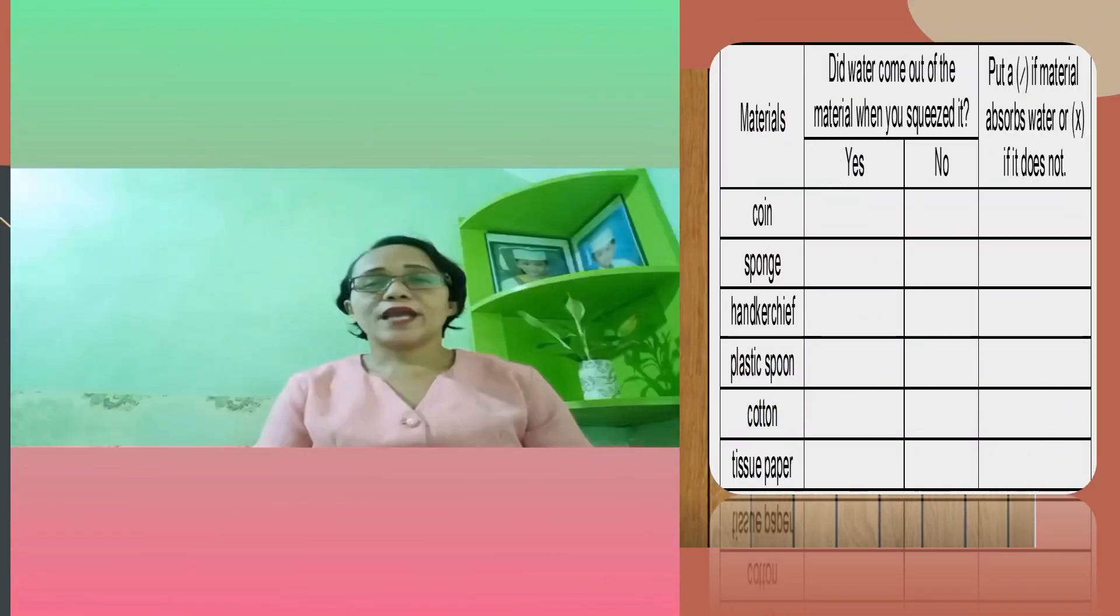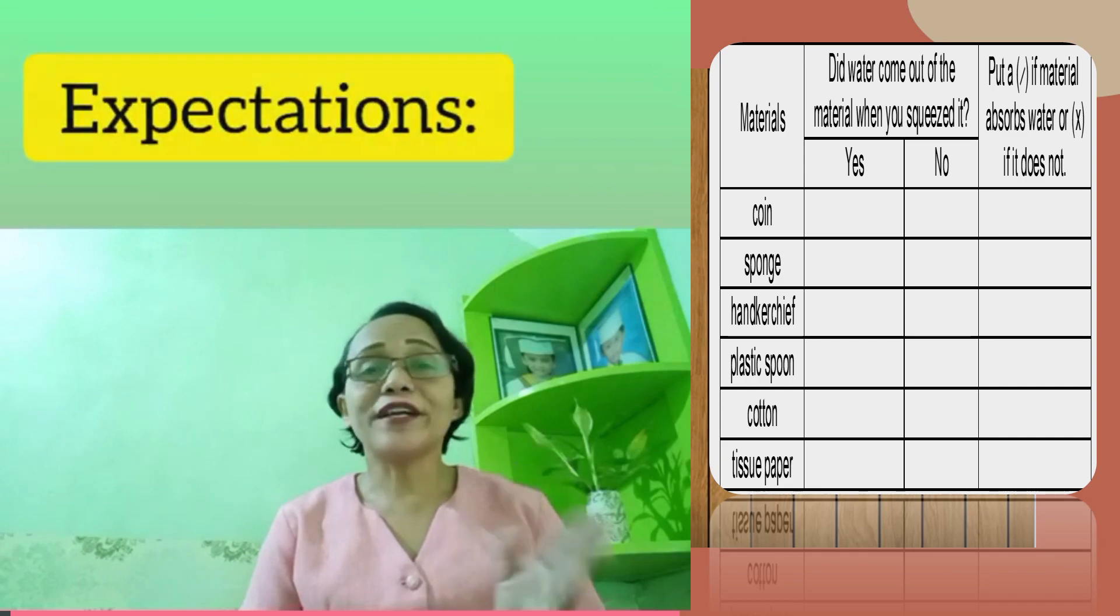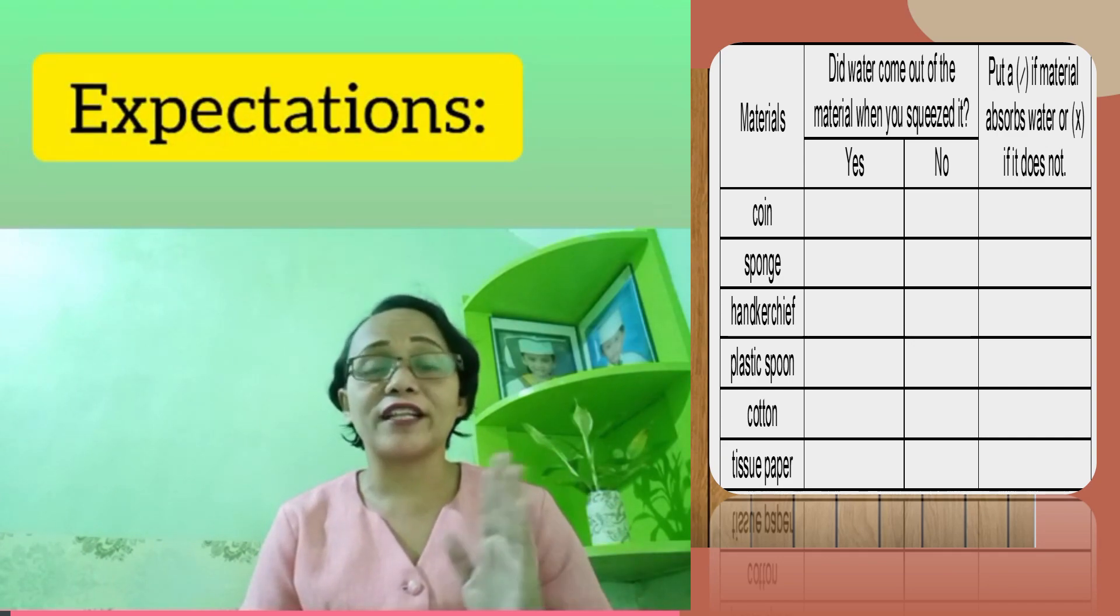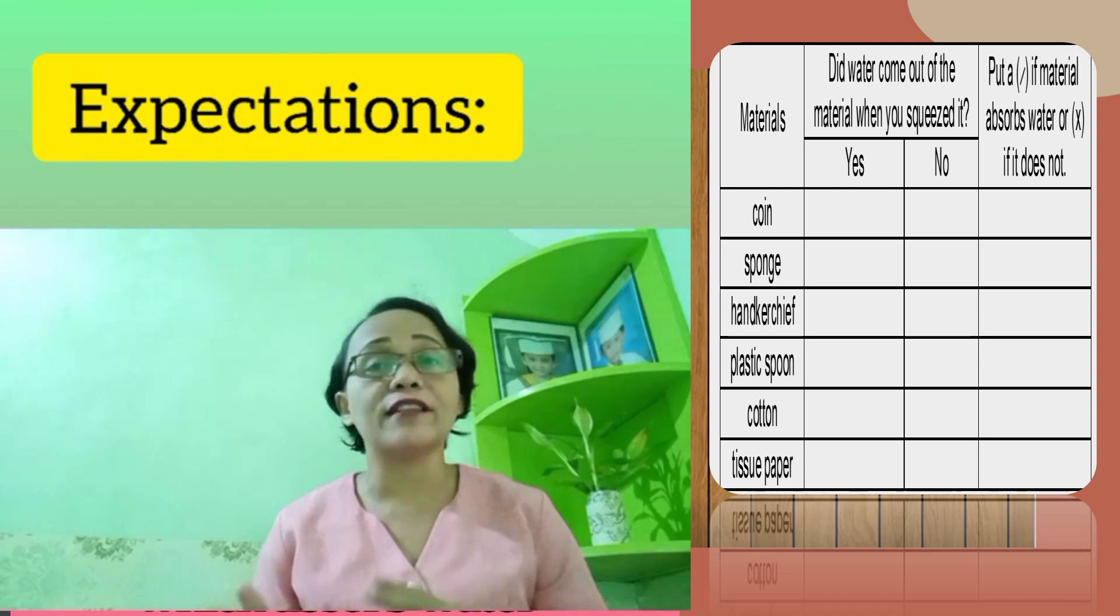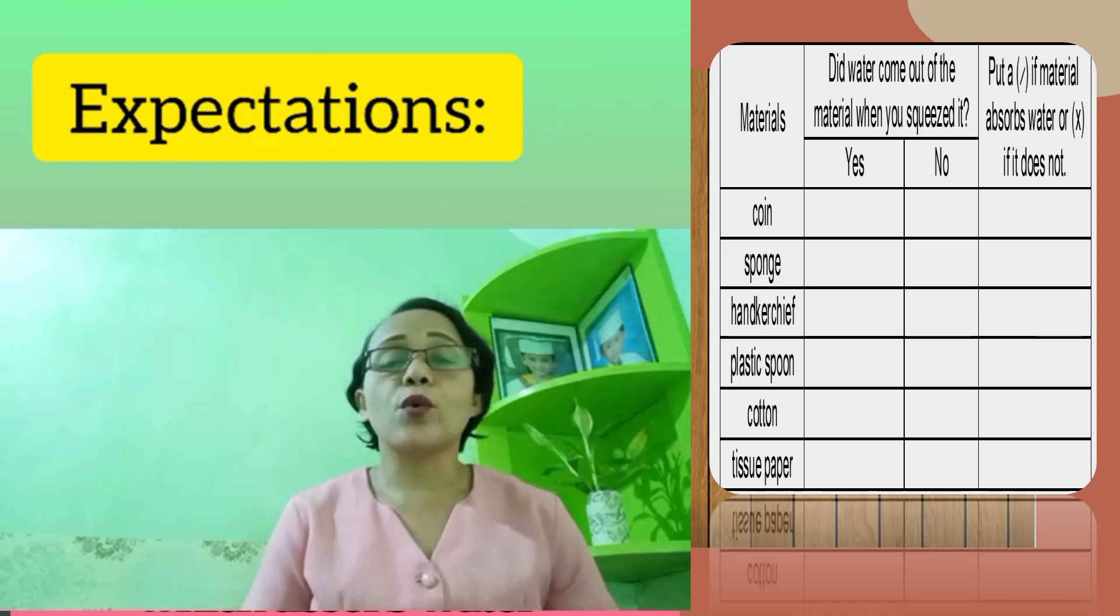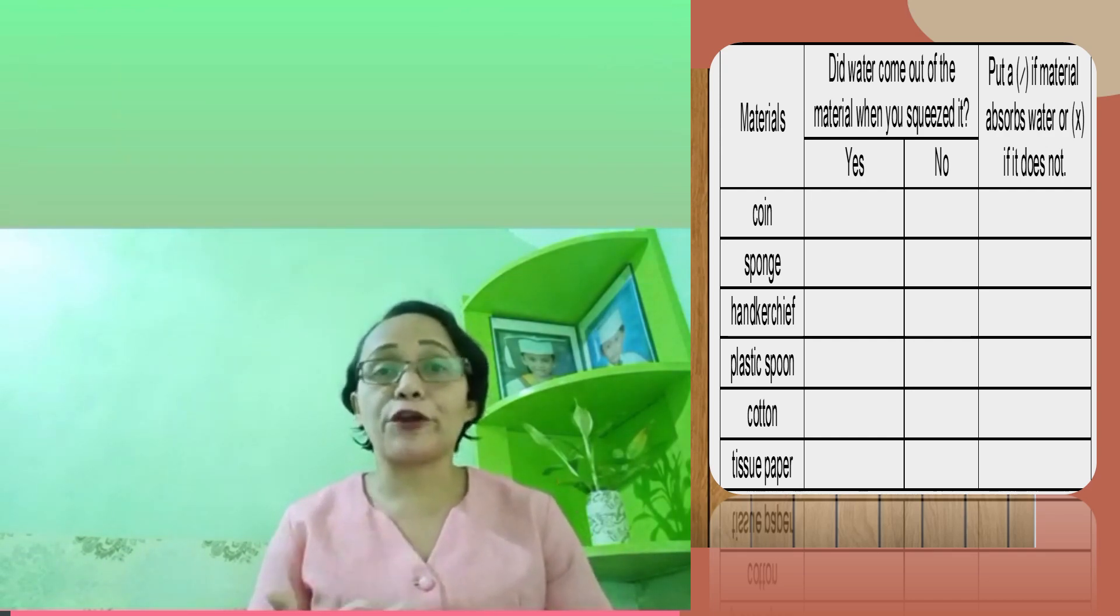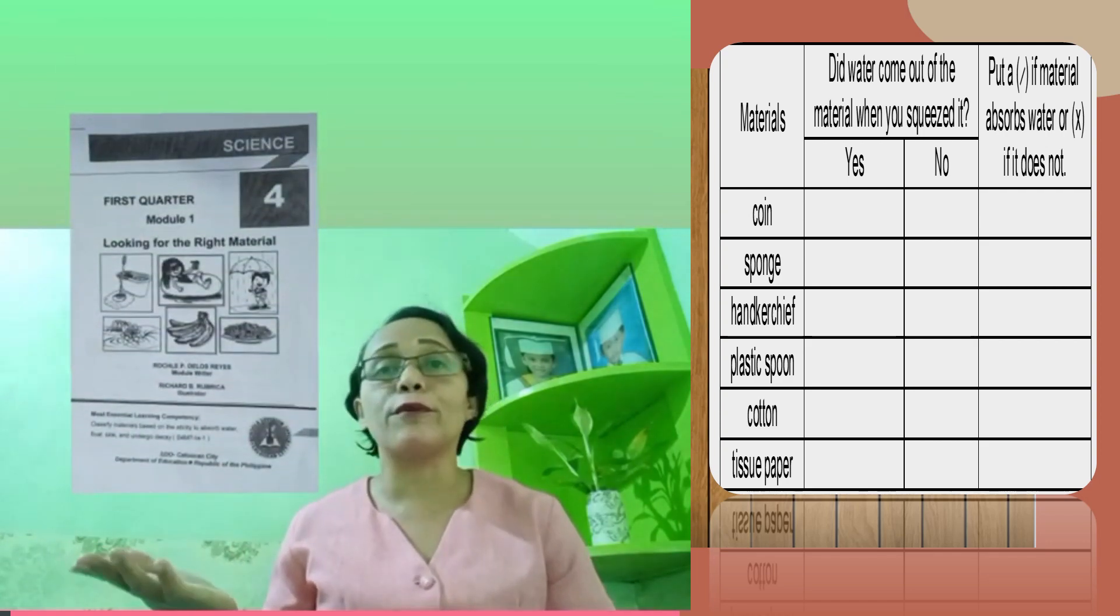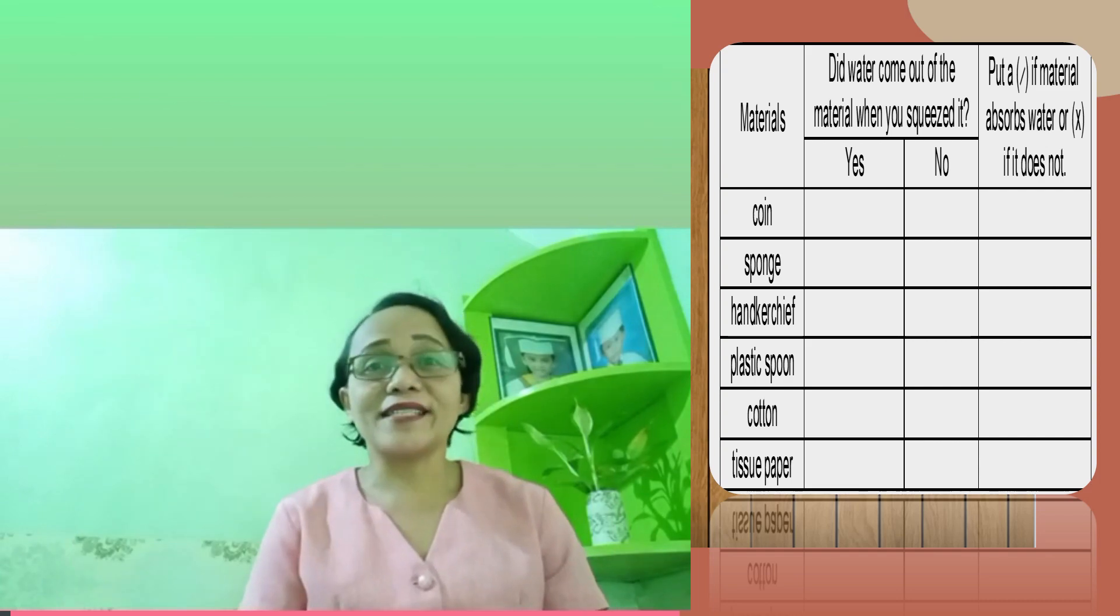Let us now proceed to activity number 1. Okay, in this lesson, you are expected to describe and classify materials based on their ability to absorb water, and compare the characteristics of materials which do not absorb water and materials which absorb water. But before you can do that, we must perform the activity on page number 4 of your module. Okay, let's do the activity.